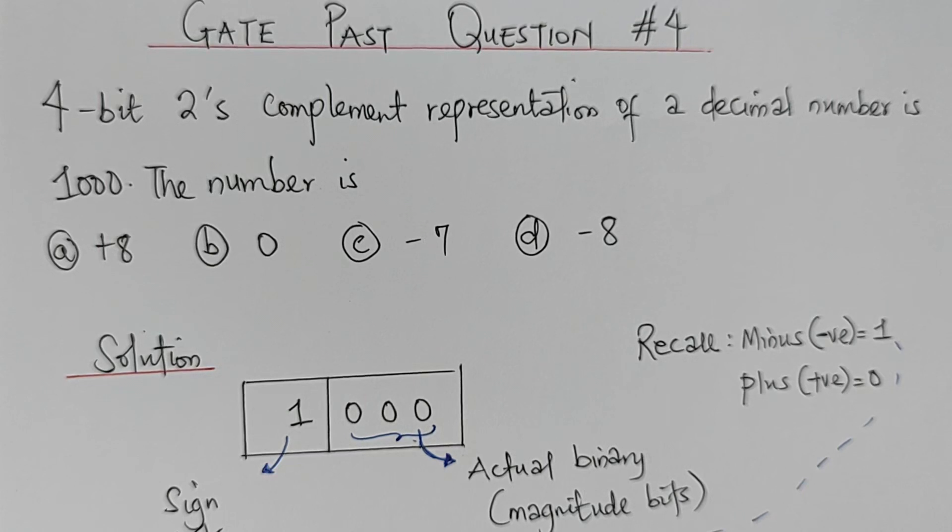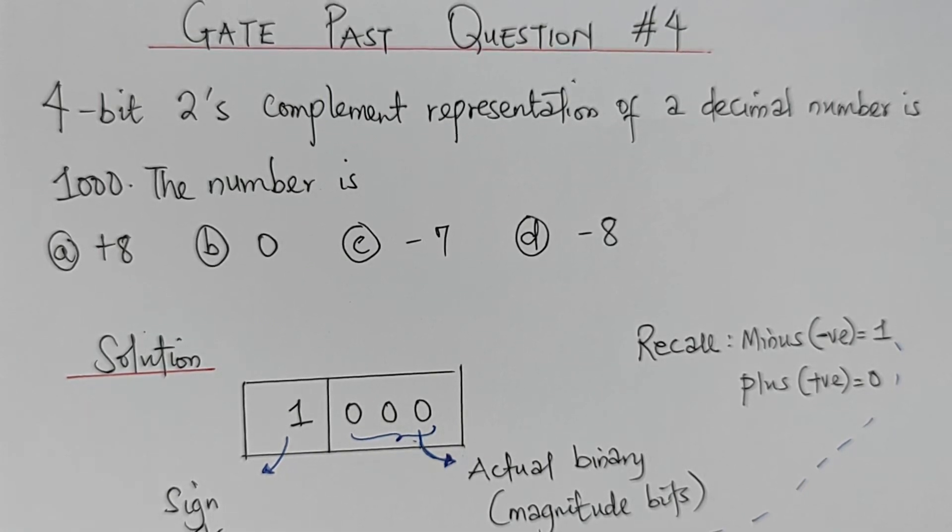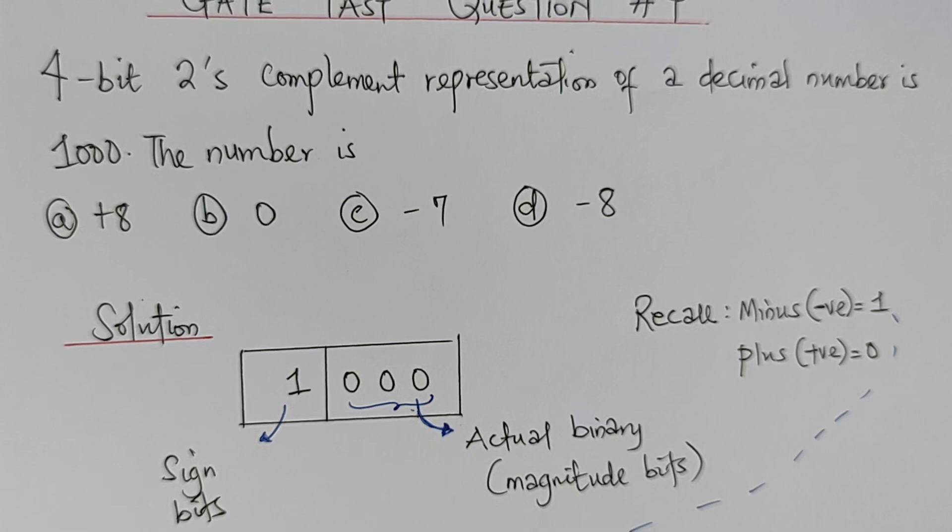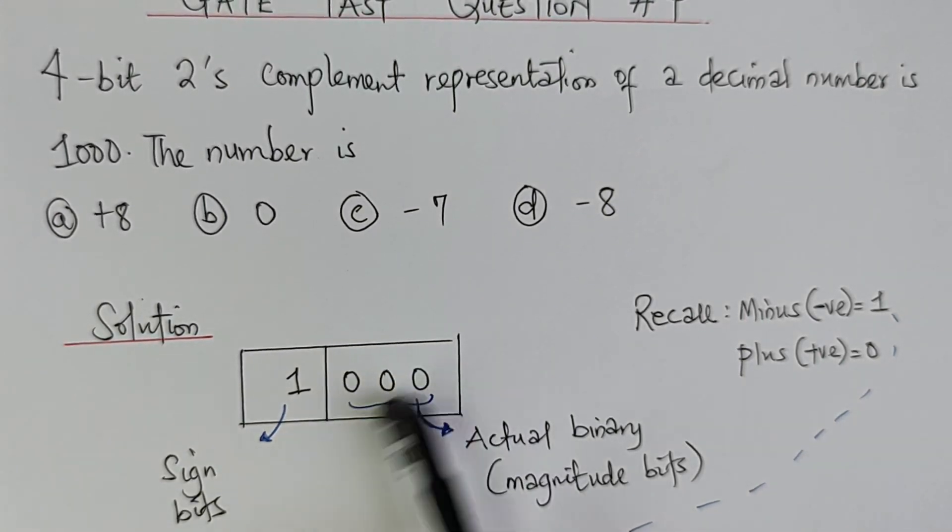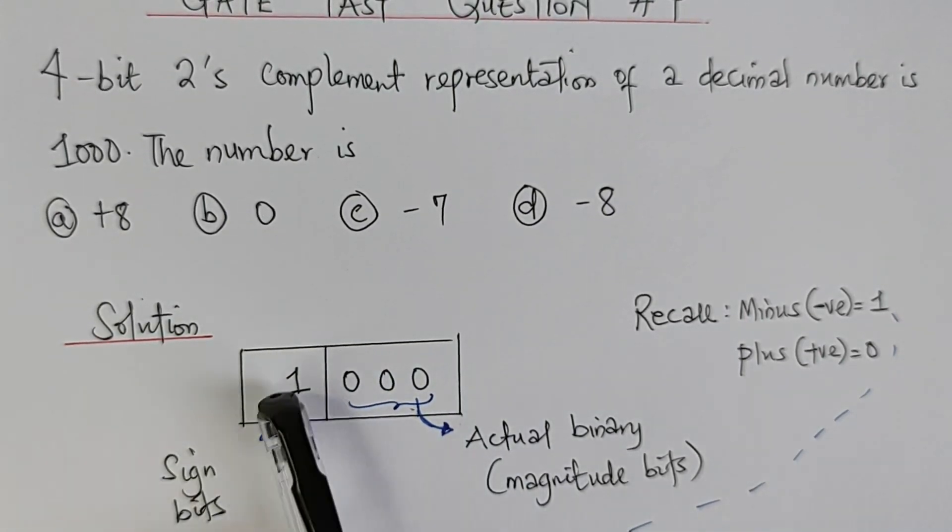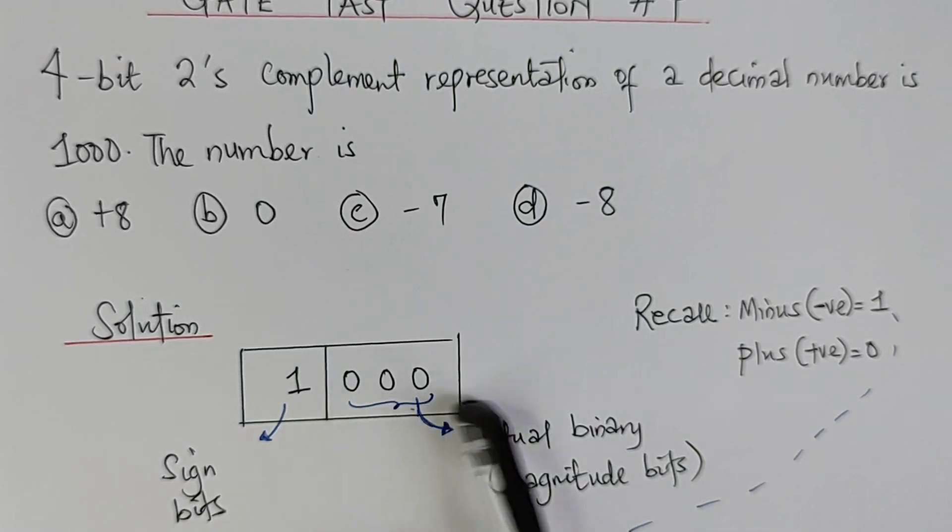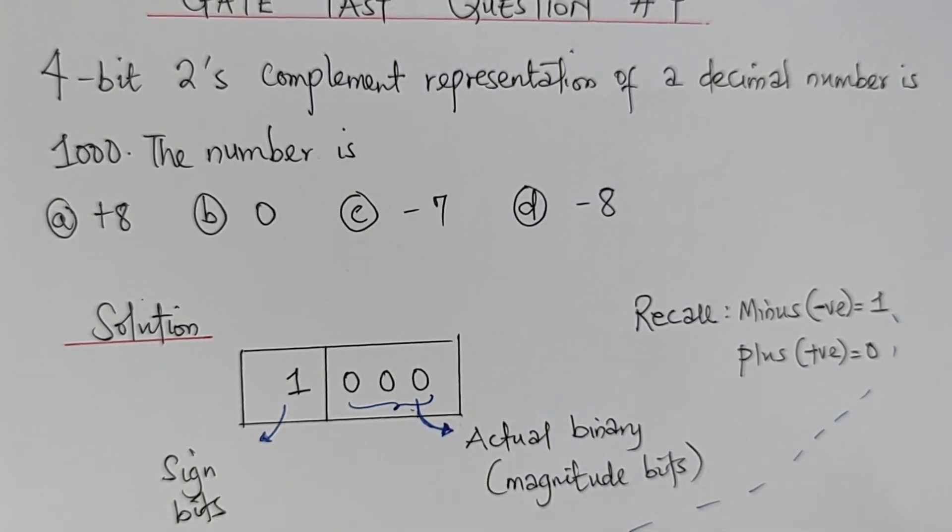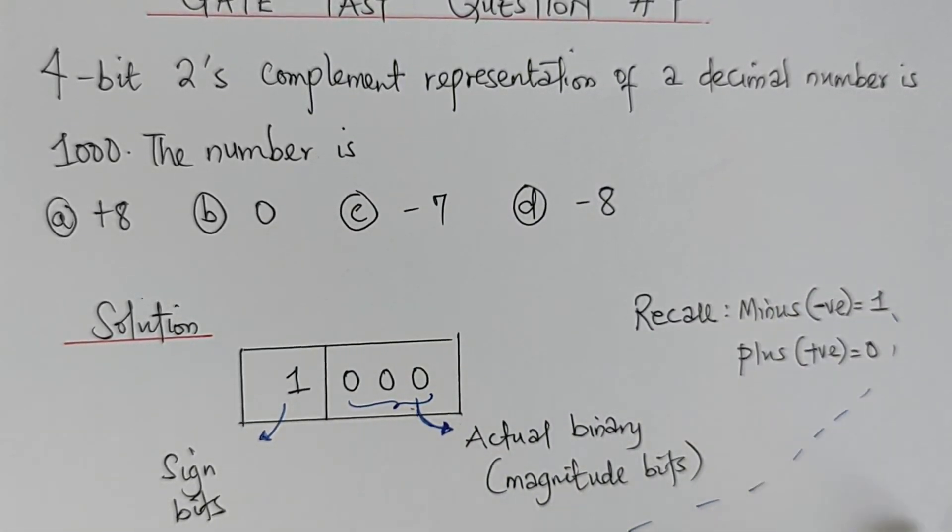The first thing to do is to represent this number in our syntax format. So this is what we have here: 1000. Take note, the first bit we have here is the sign bit and others will be the magnitude bits. Let's make a recall here. When you have minus, it's going to be 1 for the sign bit. And when you have positive, that's plus, the sign bit is going to be 0.